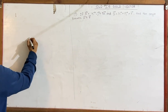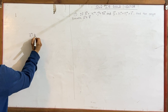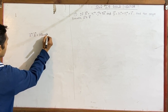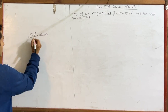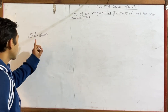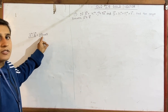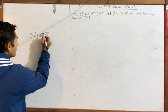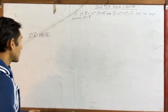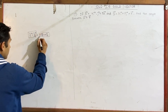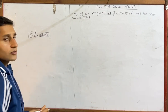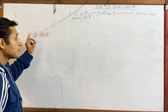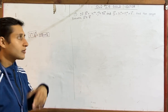Now, to find the angle between vectors, we take three things: the dot product, the magnitude of A, and the magnitude of B. So the first step is to take the dot product, magnitude of A, and magnitude of B.